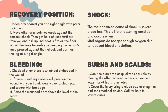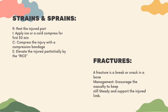What to do if the person is bleeding. First, check whether there is an object embedded in the wound. If there is nothing embedded, press on the wound with your hand, ideally over a clean pad, and secure with a bandage. Lastly, raise the wounded part above the level of the heart. The most common cause of shock is severe blood loss — this is a life-threatening condition that occurs when vital organs do not get enough oxygen due to reduced blood circulation. For burns and scalds, cool the burn area as quickly as possible by placing the affected area under cold running water for at least 10 minutes. Cover the injury using a clean pad or cling film and seek medical advice. Call for help in severe cases. For strains and sprains, apply the RICE method: R — rest the injured part; I — apply ice or a cold compress for the first 30 minutes; C — compress the injury with a compression bandage; E — elevate the injured part.